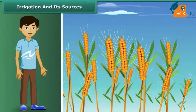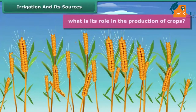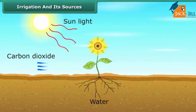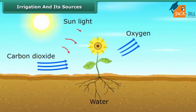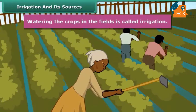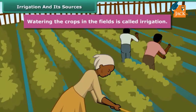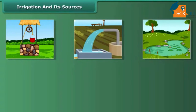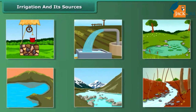Water is essential for crops because germination of seeds cannot take place under dry conditions. Water is absorbed by plant roots, and along with it, minerals and fertilizers are also absorbed. Watering the crops in the fields is called irrigation. The time and frequency of irrigation varies from soil to soil, crop to crop and season to season. Sources of irrigation include wells, tube wells, ponds, lakes, rivers, dams and canals.